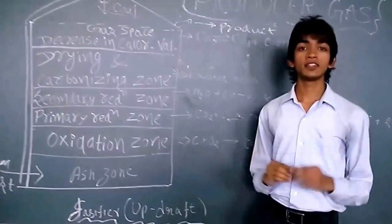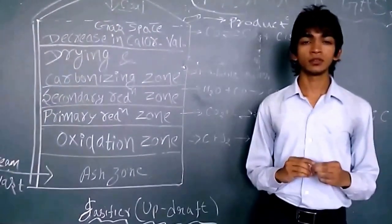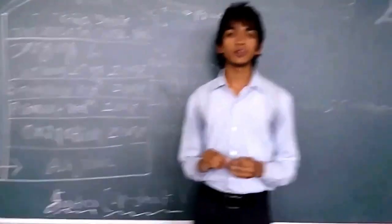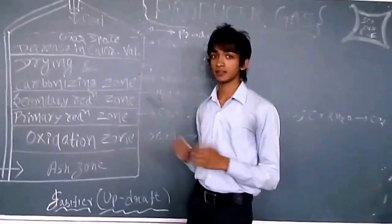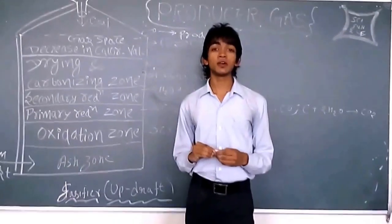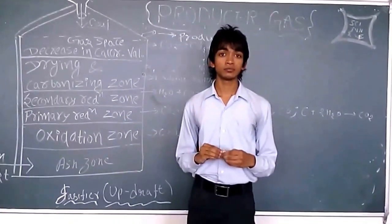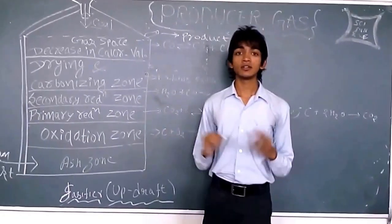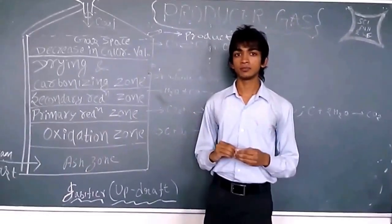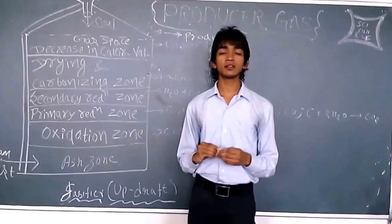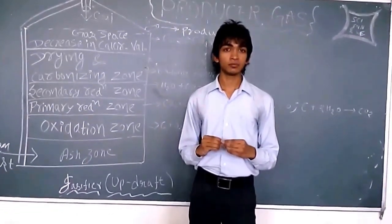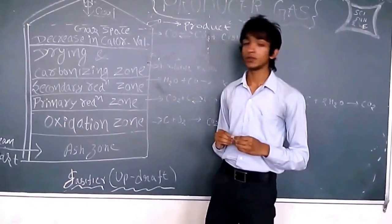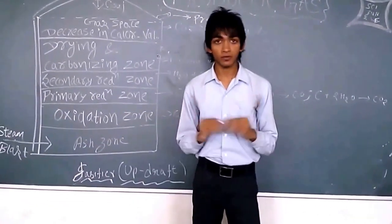In this section we will discuss about the gasifier. A gasifier is used for producing producer gas. In this the fuel may be biomass or coal as we discussed earlier and the reactant is air or steam blast. The gasifiers are basically of three types: updraft, downdraft and crossdraft. In this section we will discuss about the updraft.